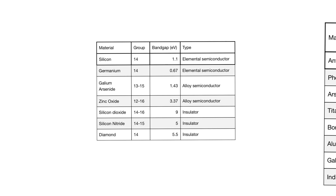This is even though carbon has four electrons in the outer shell, and even though when it forms diamond it has a crystal structure that is incredibly similar to that of silicon. So why do we consider diamond an insulator, even though its band gap level is actually pretty close to that of, for example, zinc oxide?